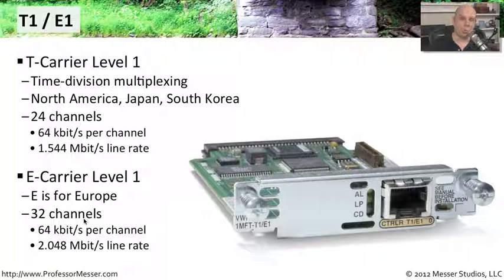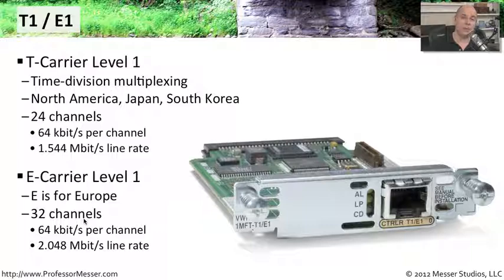They all work in a similar way — you have that same time division multiplexing. But the primary differences between North America and Europe are the number of channels supported on a single T1 line or an E1 line.